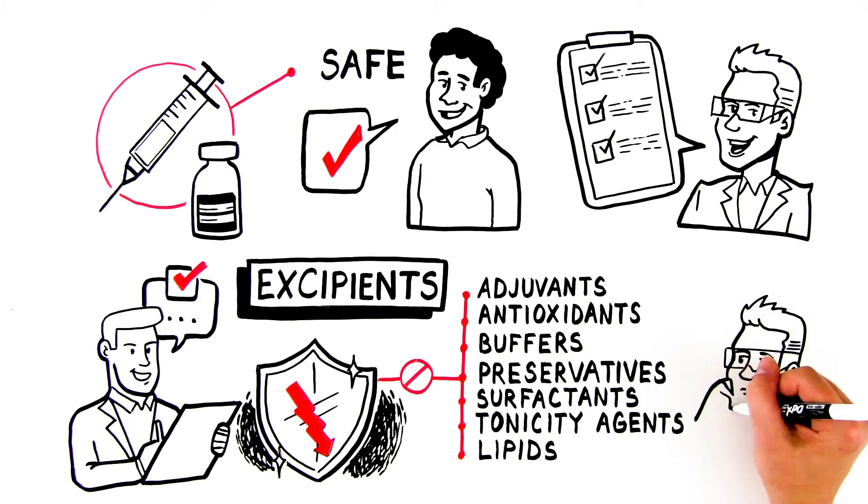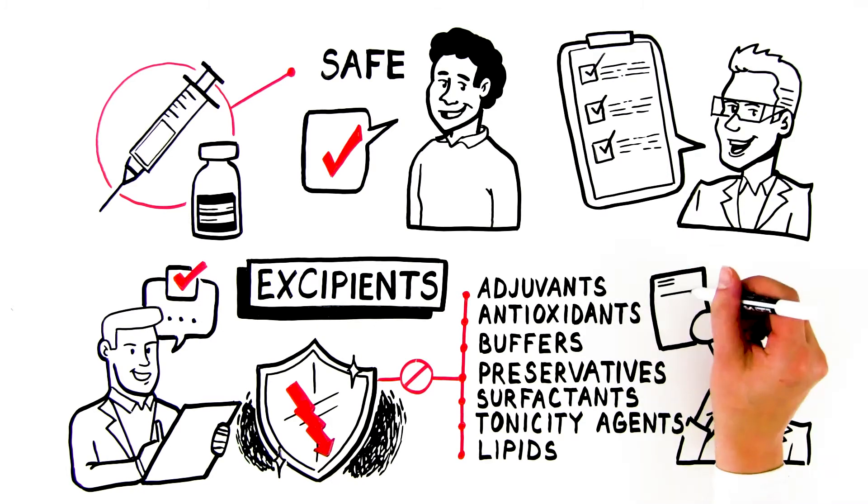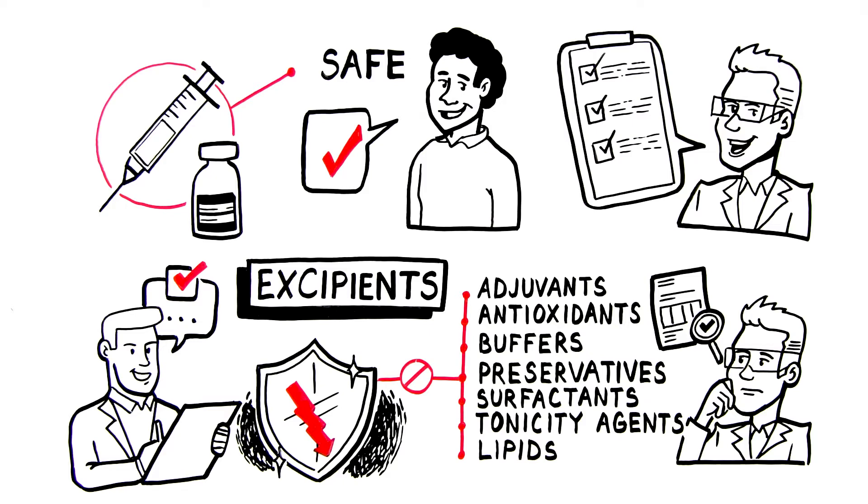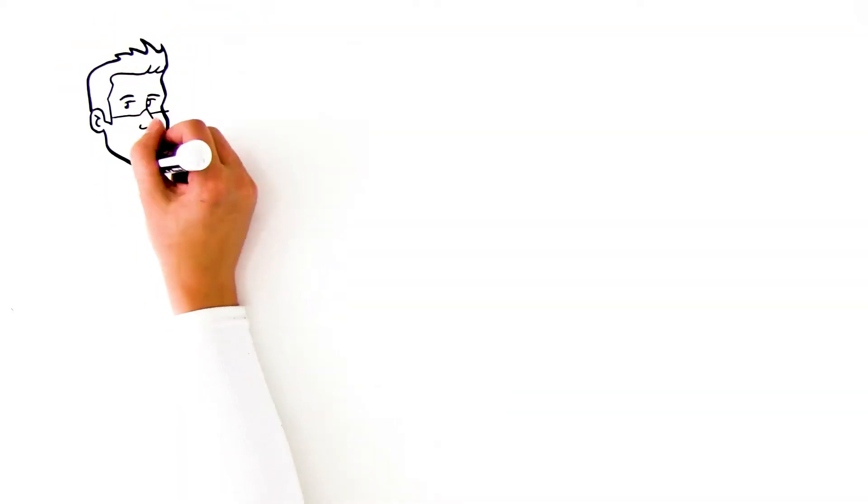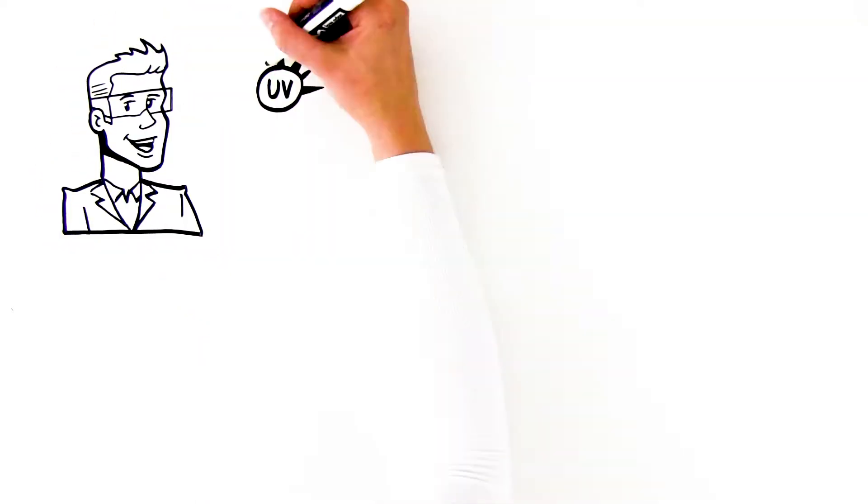When developing an LC method to test the quality of the individual vaccine ingredients and the final formulation, you need an approach capable of measuring the discrete components. Problem is, most excipients lack UV-absorbing structures.